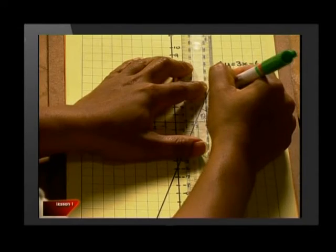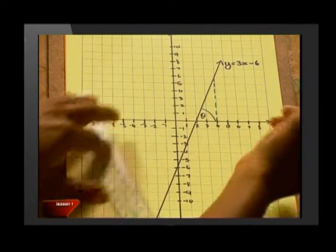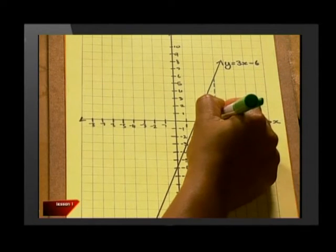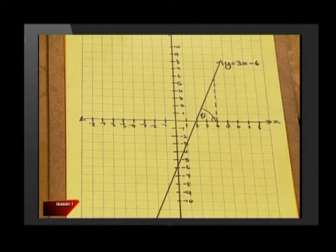Have a look at this. If I drop a perpendicular line from this point 4, 6 on the straight line down to the x-axis, I will form a right angle triangle. In this triangle, do we have some information that could help us to find the size of angle theta? That sounds more like trigonometry than coordinate geometry.